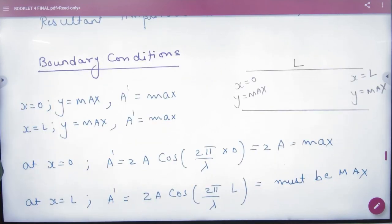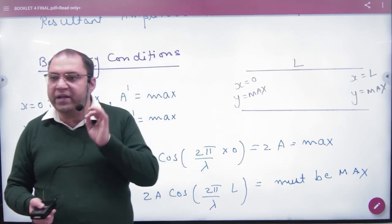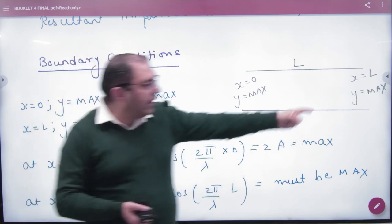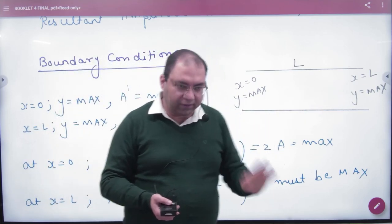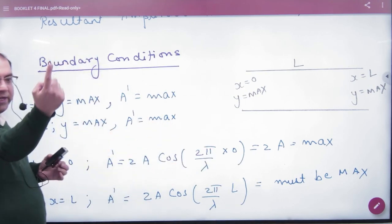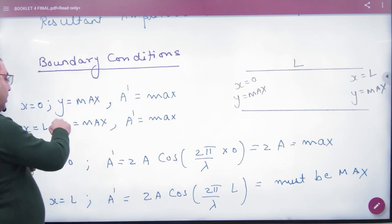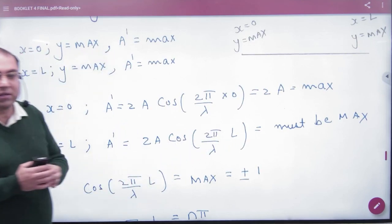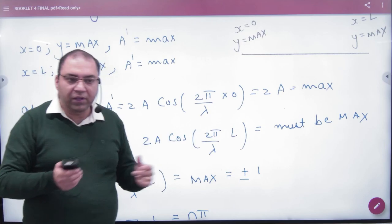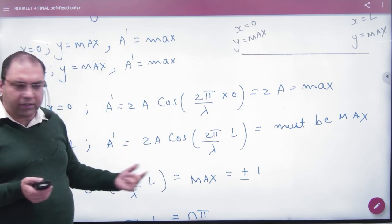The first boundary condition is x is equal to zero, free end is, so here will be anti-node generated. What will be y value? Maximum. Amplitude a to a minus a.